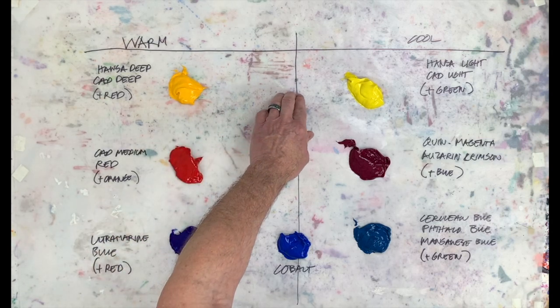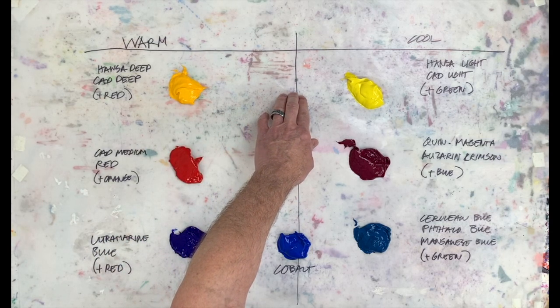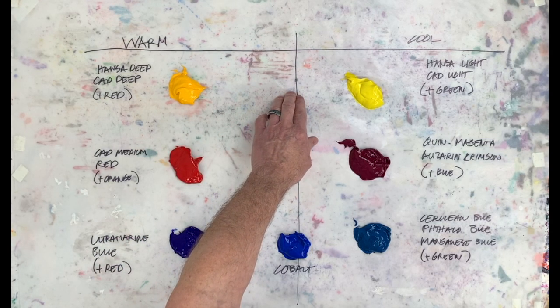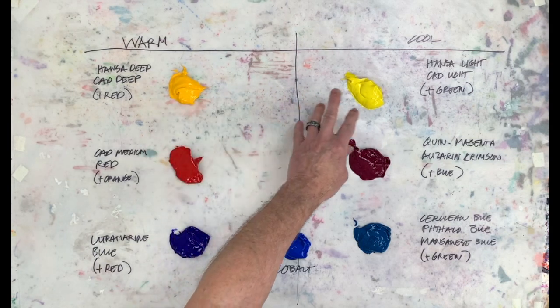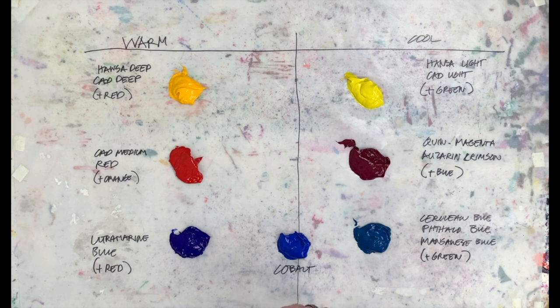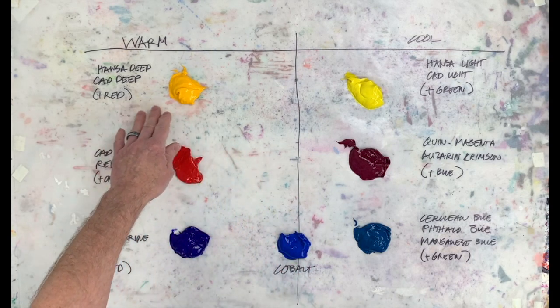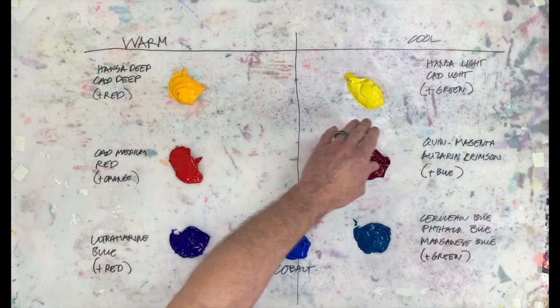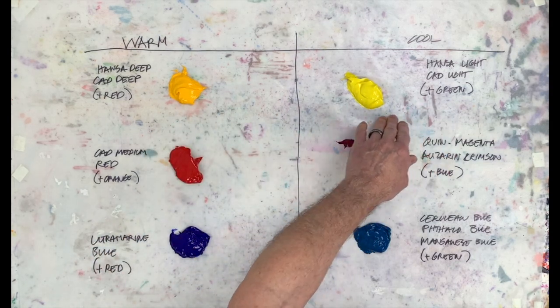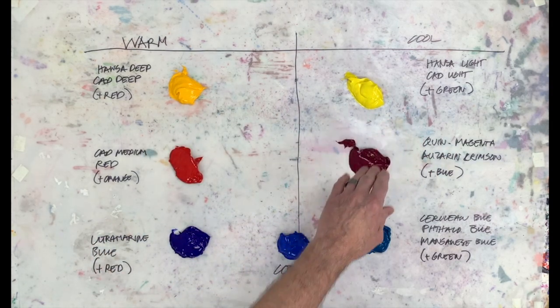If I had a primary yellow in here, which I don't use, we could take that and add a little bit of red to it and we would get this, and add a little green and we would get that. So this is going to have a little red in it which makes it warmer, this is going to have a little green in it that makes it cooler.